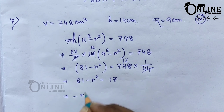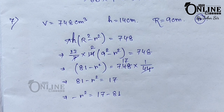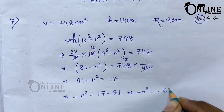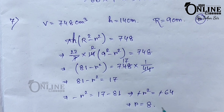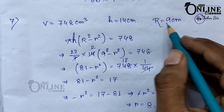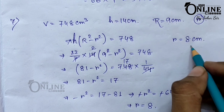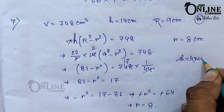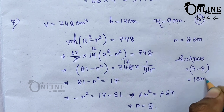From 81 minus r squared equals 17: r squared equals 81 minus 17 equals 64, so r equals 8. If the external radius is 9 centimeters and the internal radius is 8 centimeters, the thickness equals 9 minus 8 equals 1 centimeter.